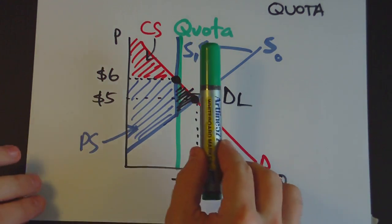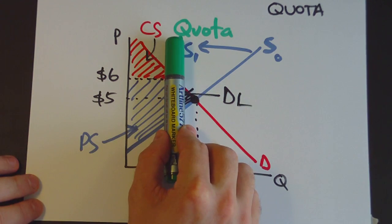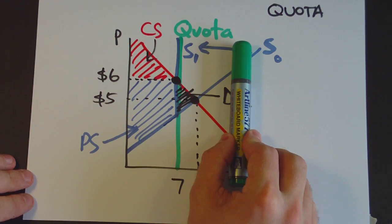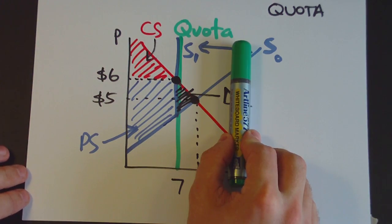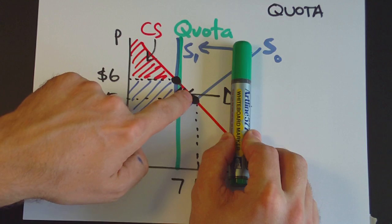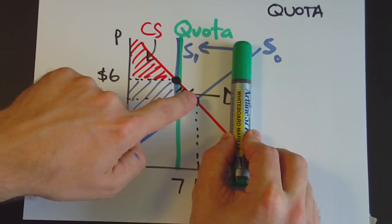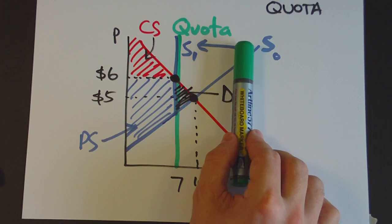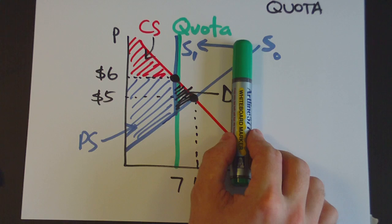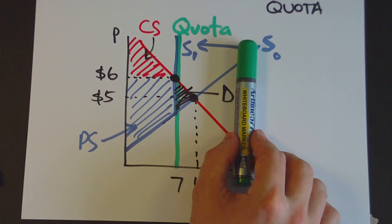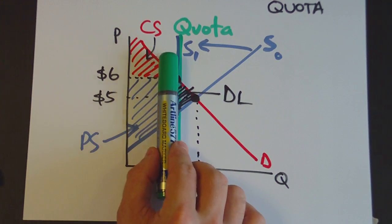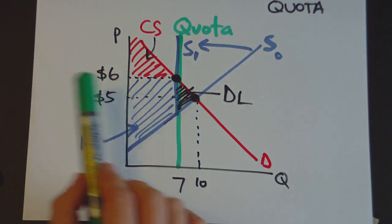Just as a side note, quotas are only effective if they're to the left of the market equilibrium. If you impose a quota up here, it might seem like a good idea, but it's not going to do anything because that is the equilibrium point. So if the quota is set above that equilibrium point, it's not actually doing anything — it's not an effective quota. It would require a shift in the demand or supply curves for it to become effective. In order for a quota to be effective, it's normally set to the left at a lower quantity than the actual equilibrium quantity in the market.